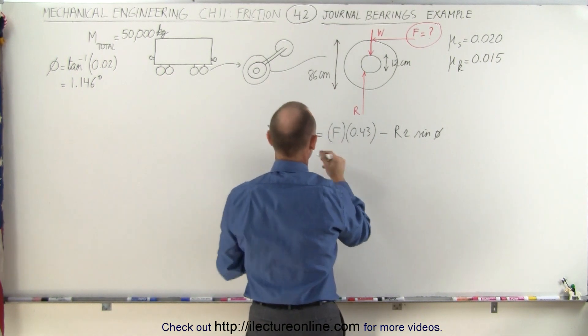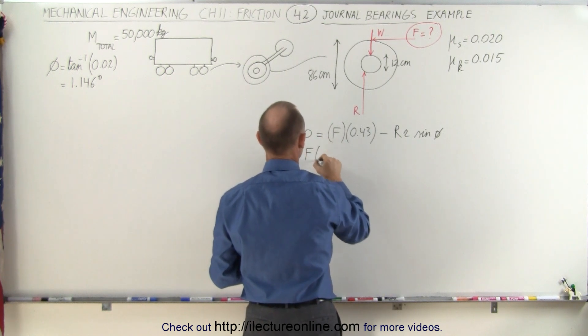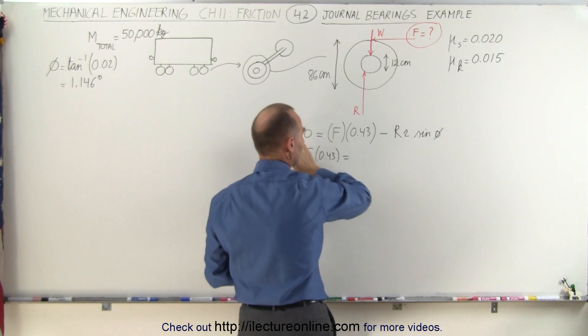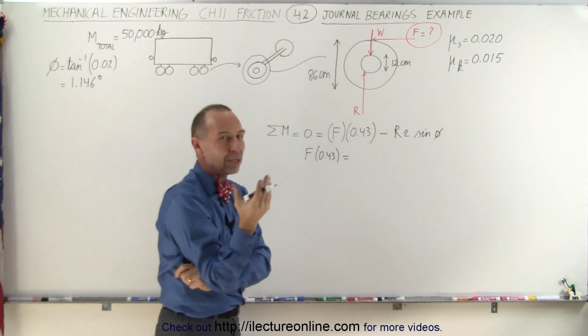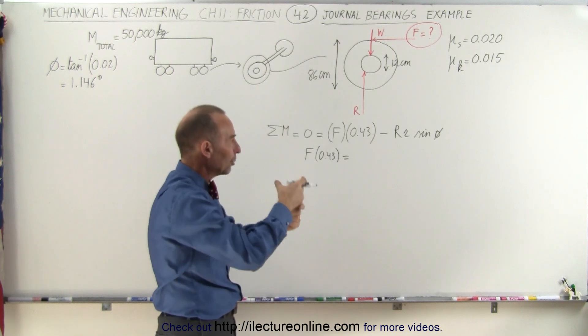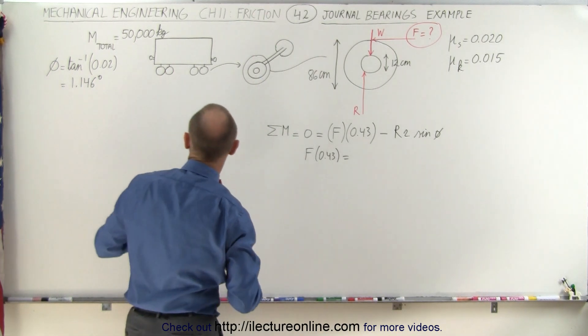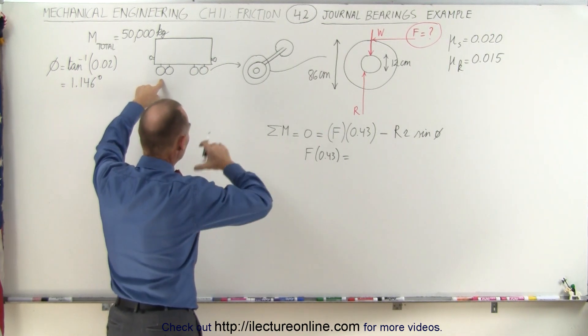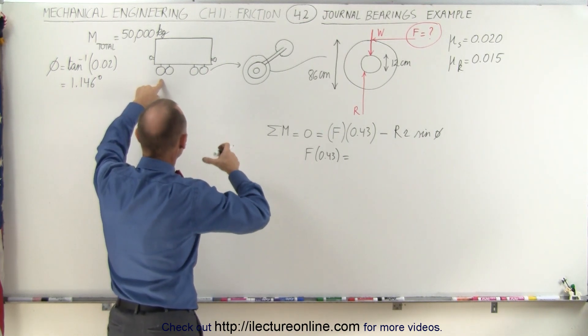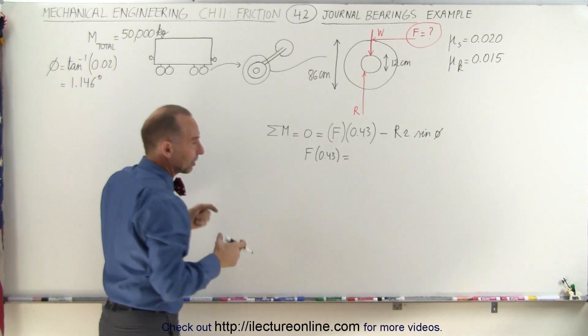And maybe I can already separate those two. So F times 0.43 is equal to, when I move that to the other side, they become positive, R. Now R is going to be equal to w, the weight or the load on the axle. Now notice there's eight wheels. Therefore, the axle, each axle will have two wheels. That means we take the 50,000 kilograms,